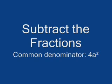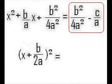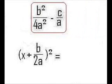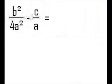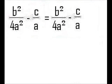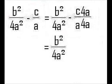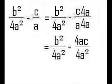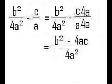Now we must subtract the fractions on the right hand side of the equation. The common denominator is 4a squared. The first fraction already having that denominator, we don't need to do anything with it. For the second fraction, the c over a, we must multiply 4a to the top and bottom and simplify.